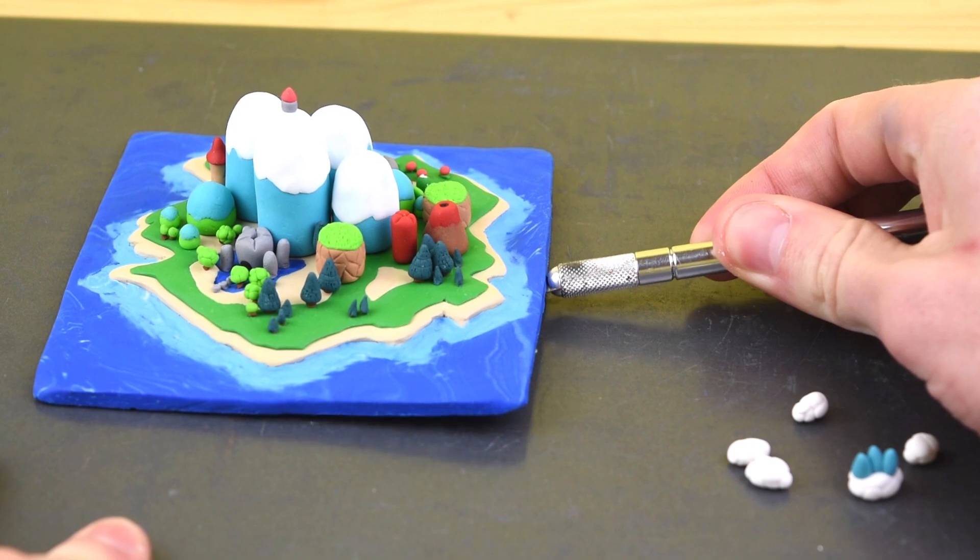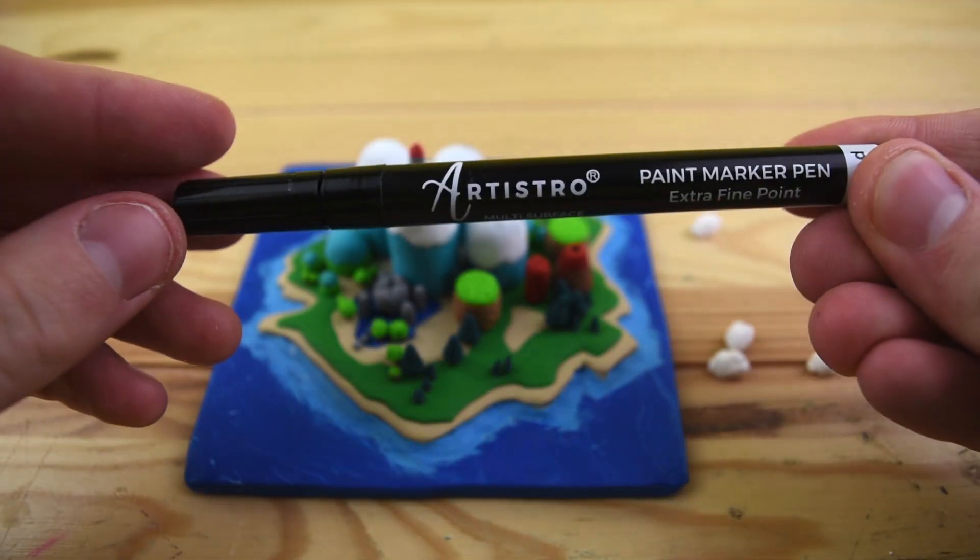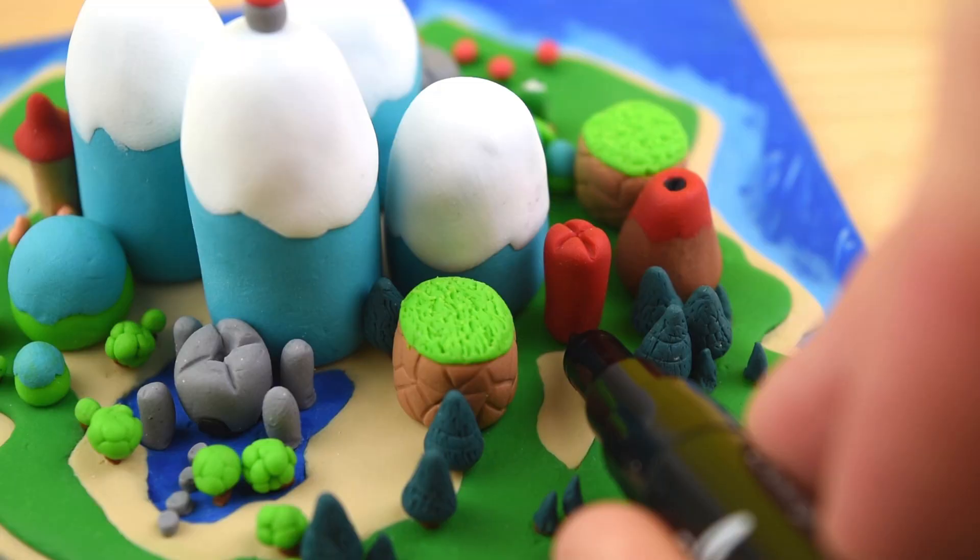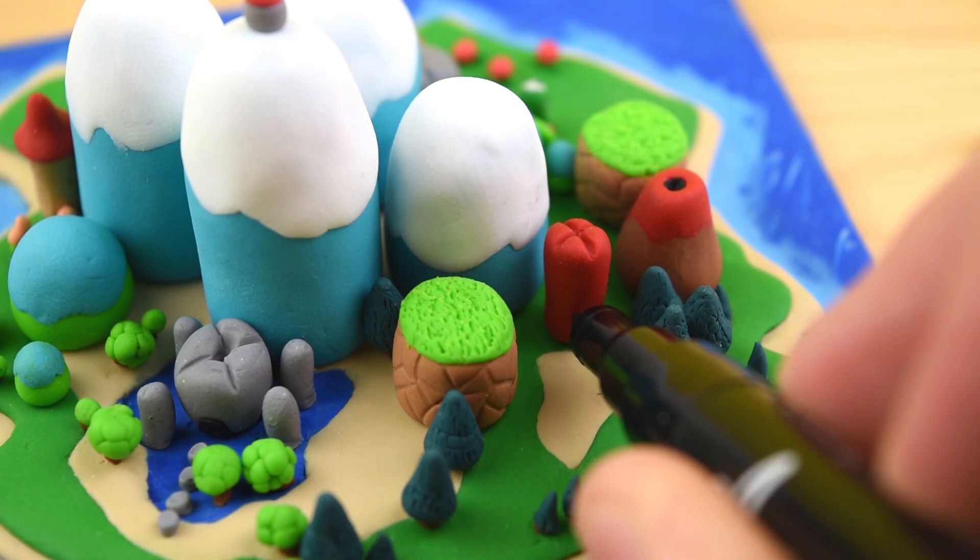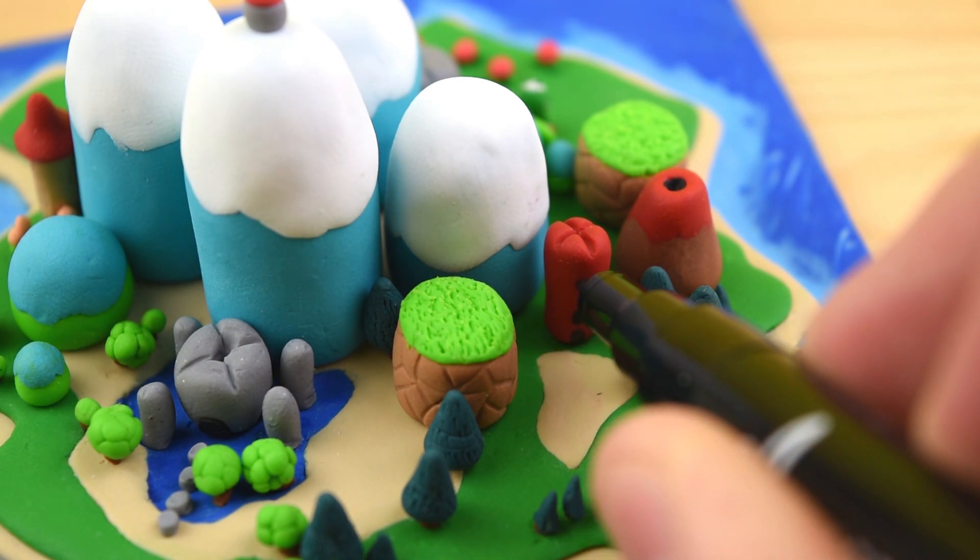After baking, we can remove it from the tray and start working on all of the details. First, we have the paint marker, and this will be to create all of the different windows and doors on this tower.